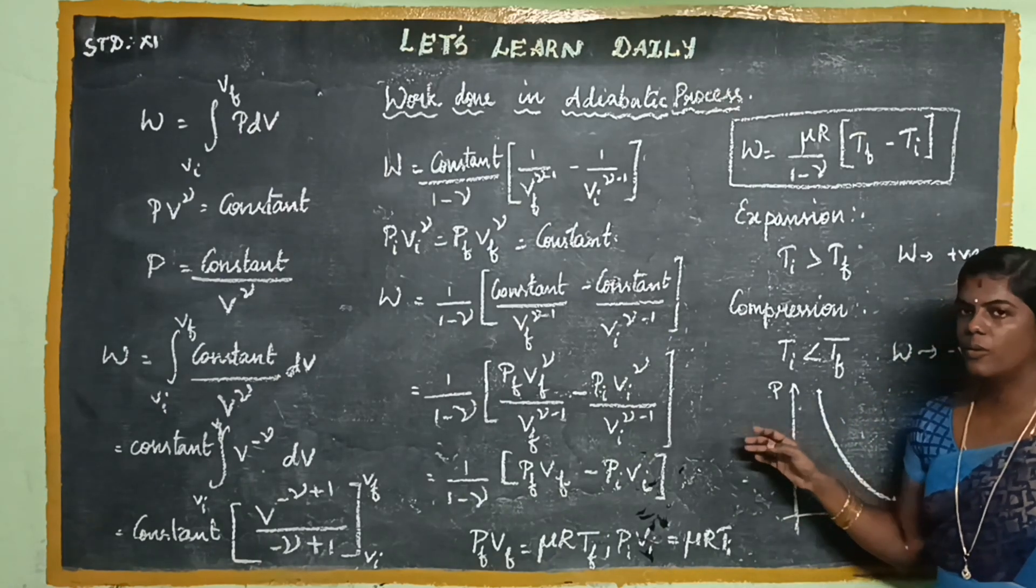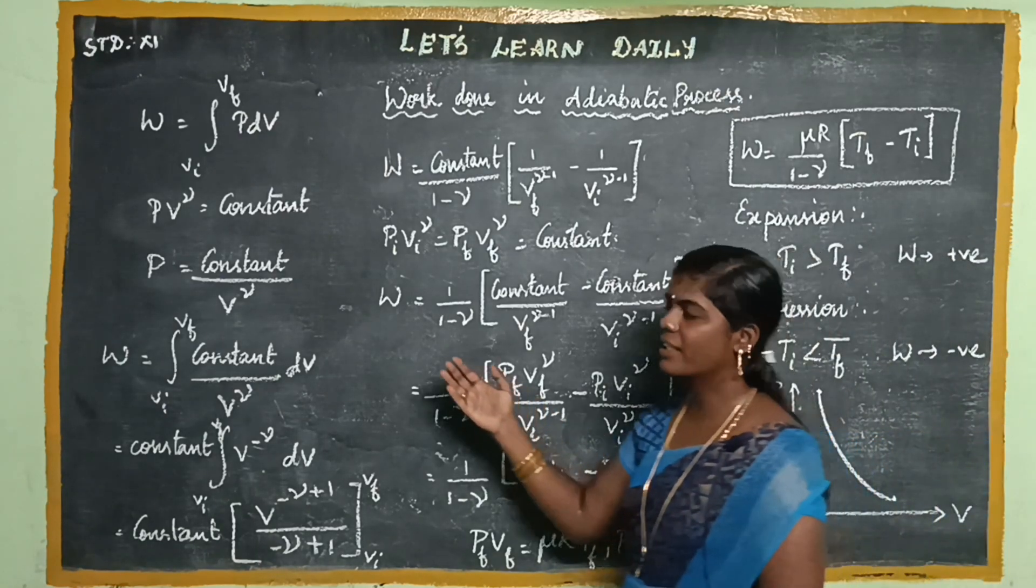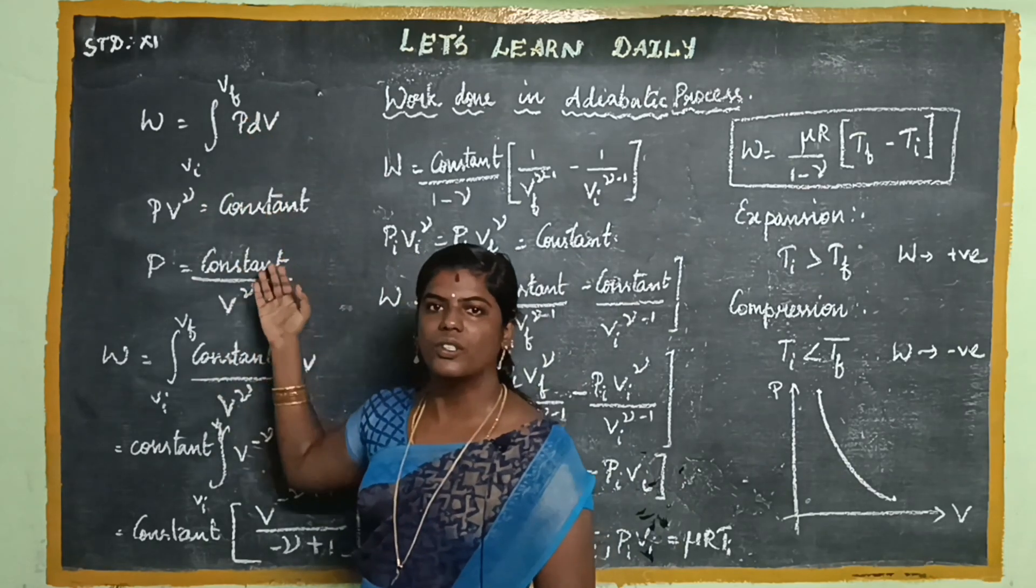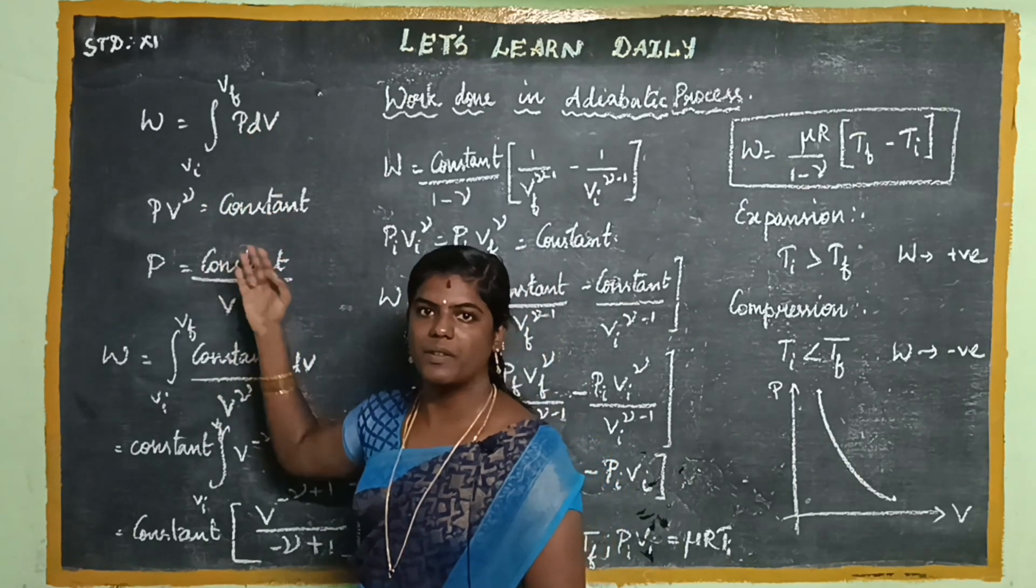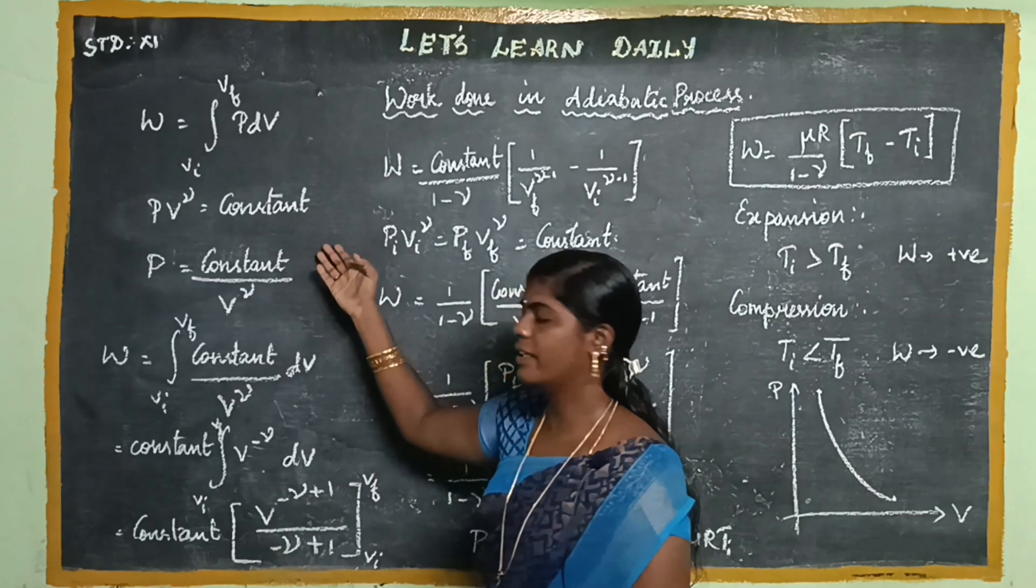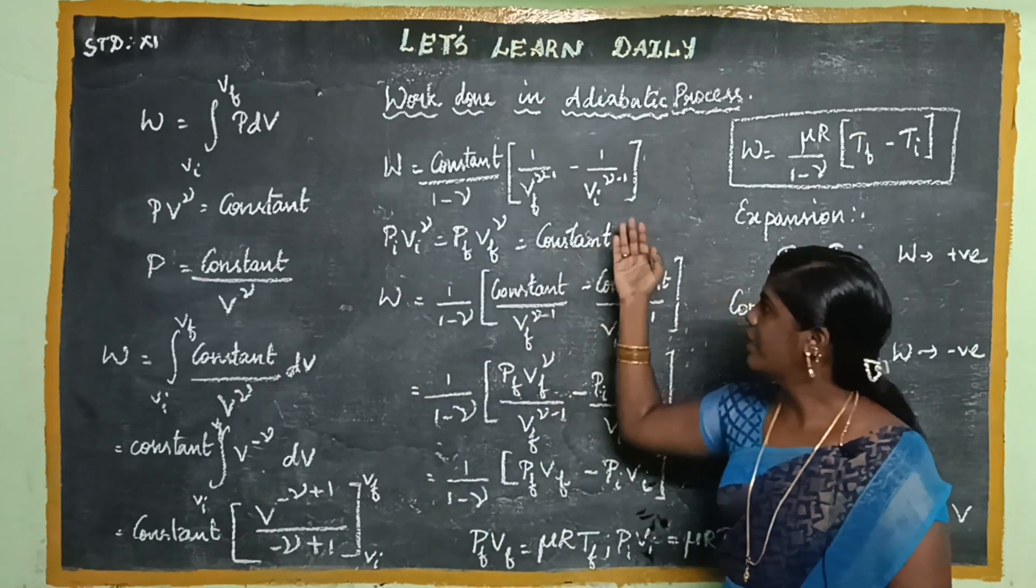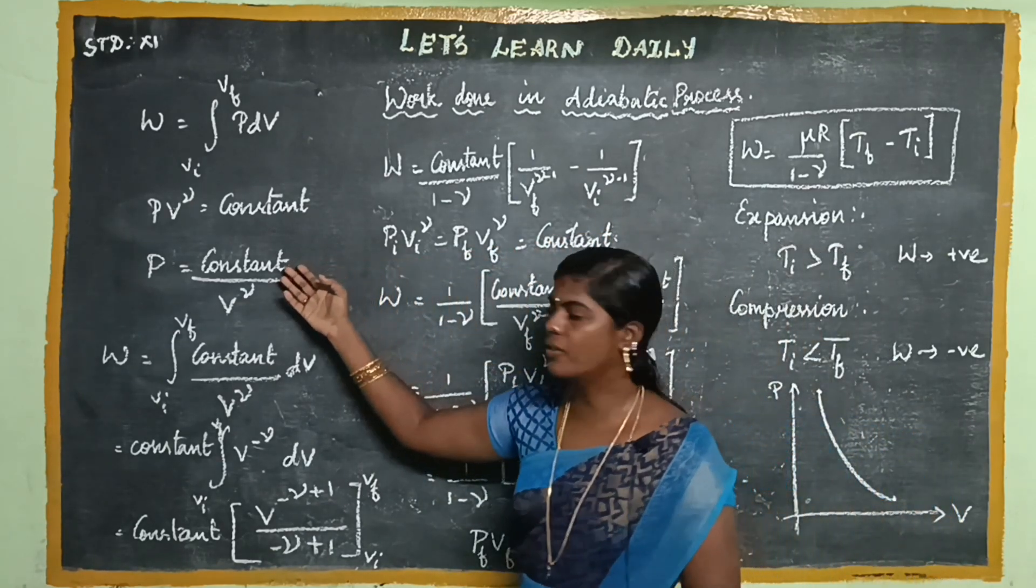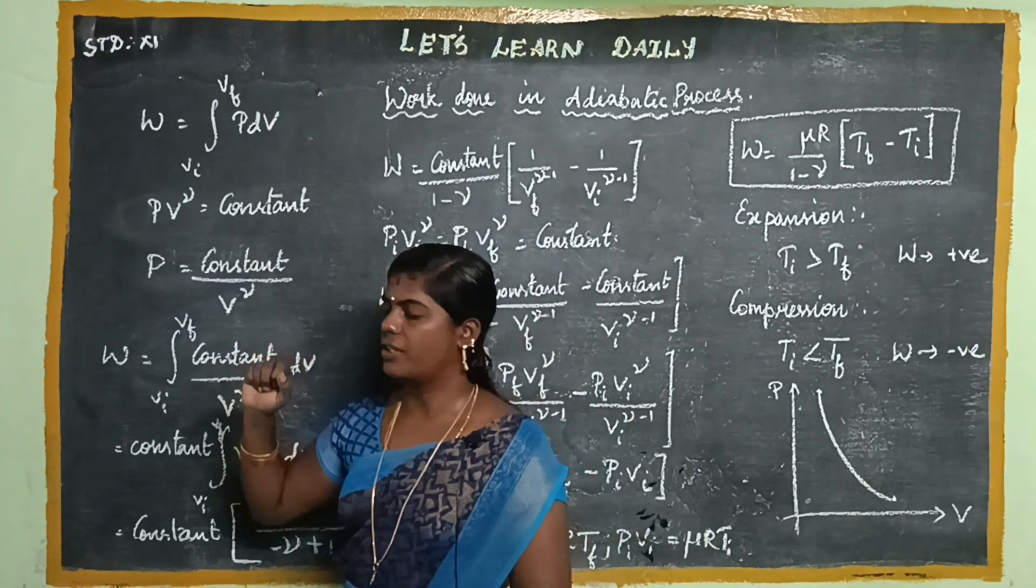So here the work done is an integral. This is the equation of state: PV^gamma equals constant. As you already know, the adiabatic process and the equation of state.